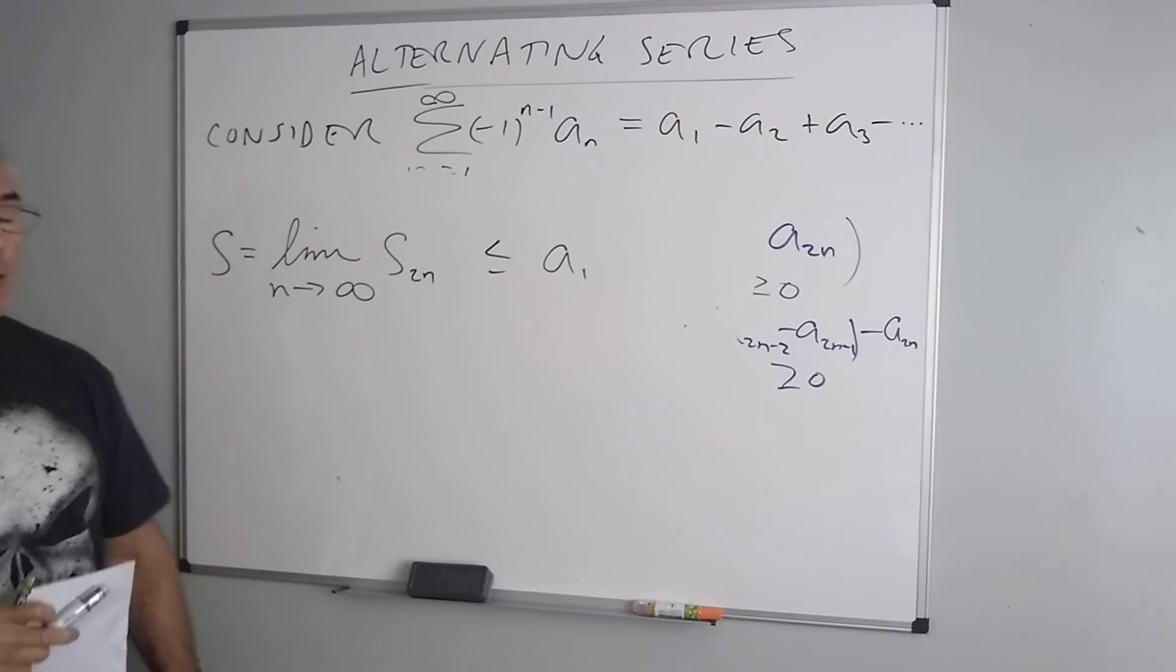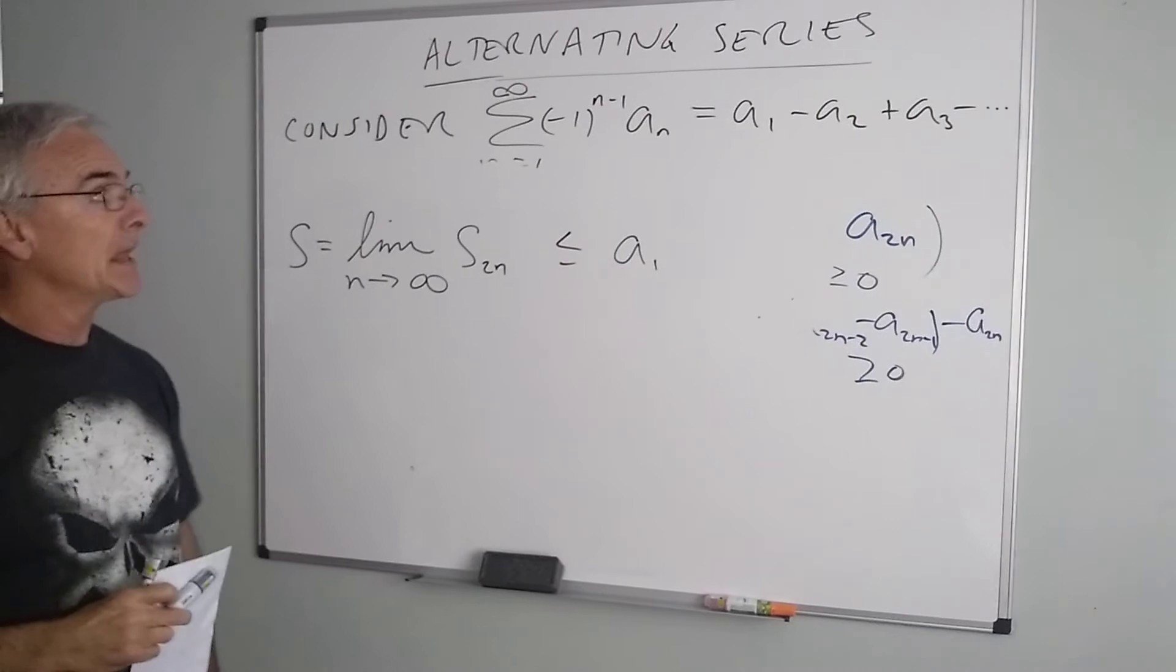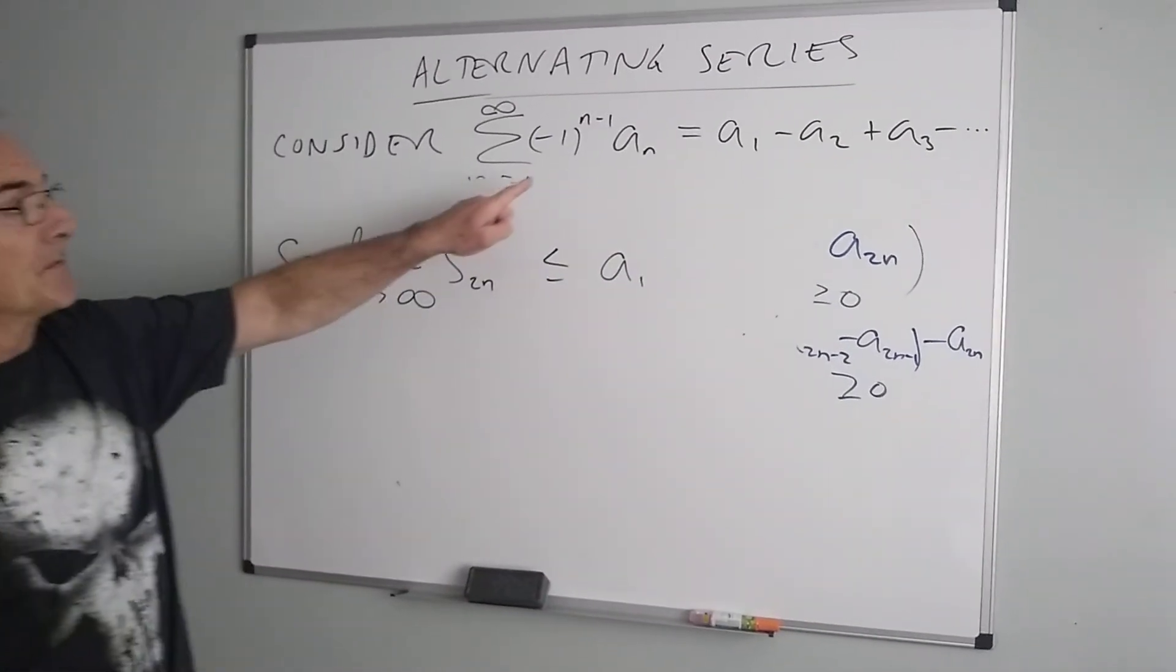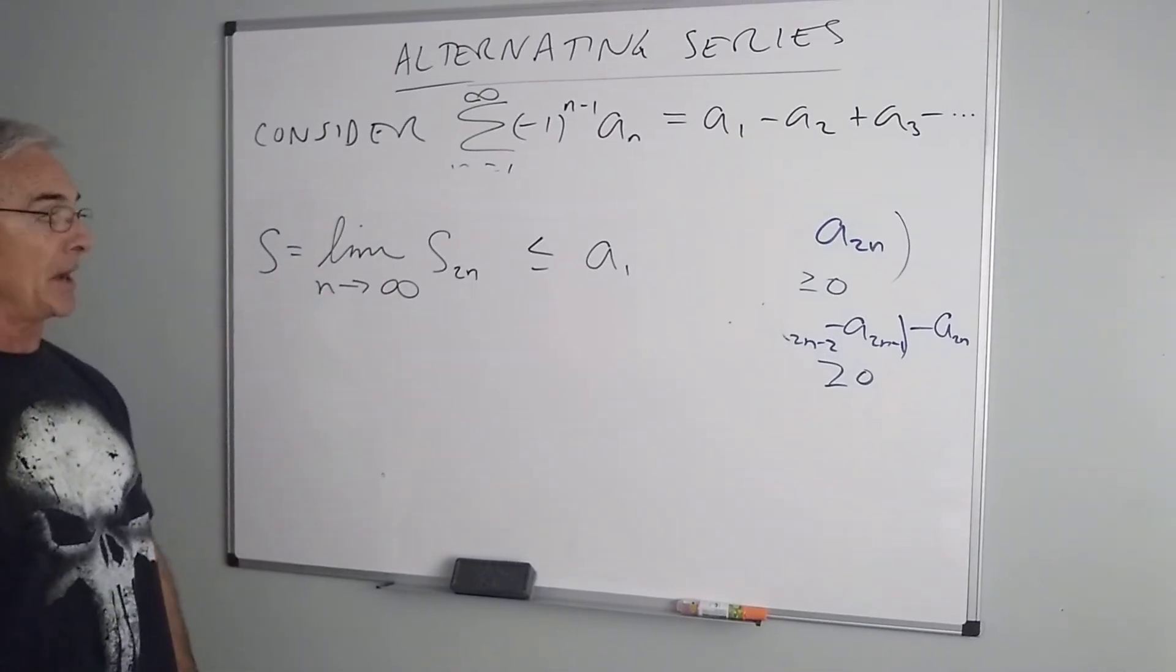If it takes the alternating nature to get it to converge, then we call that type of convergence conditional. If the original series would have converged anyway without the alternating nature, we call that absolute convergence, kind of like absolute value of every term.